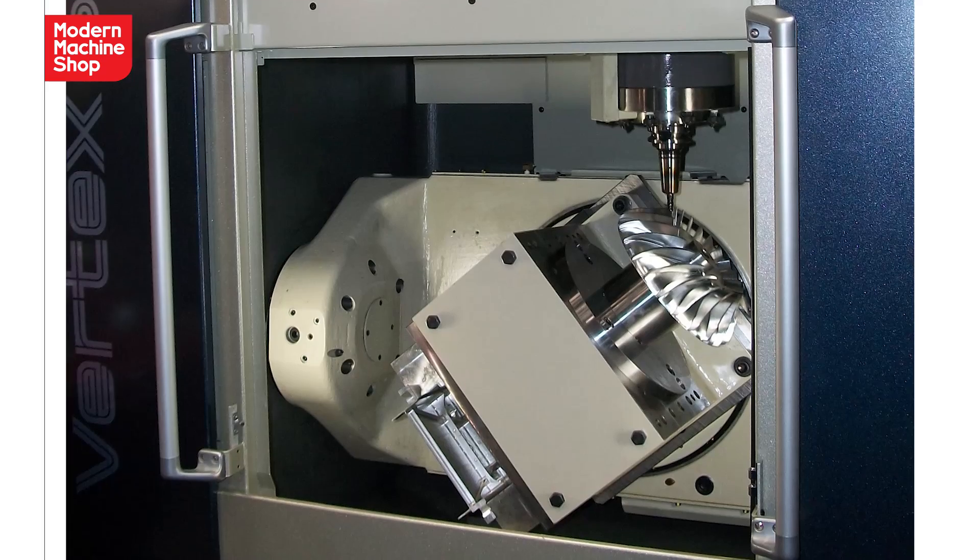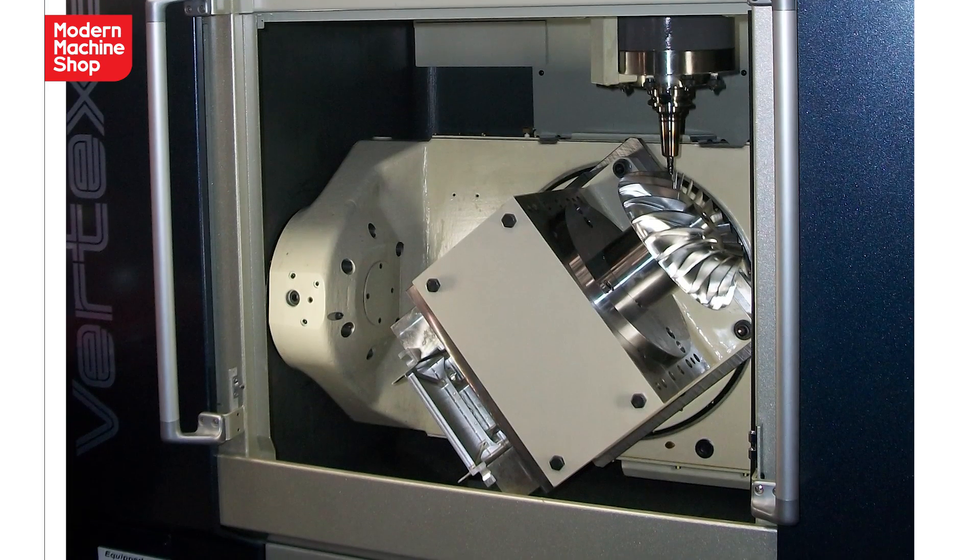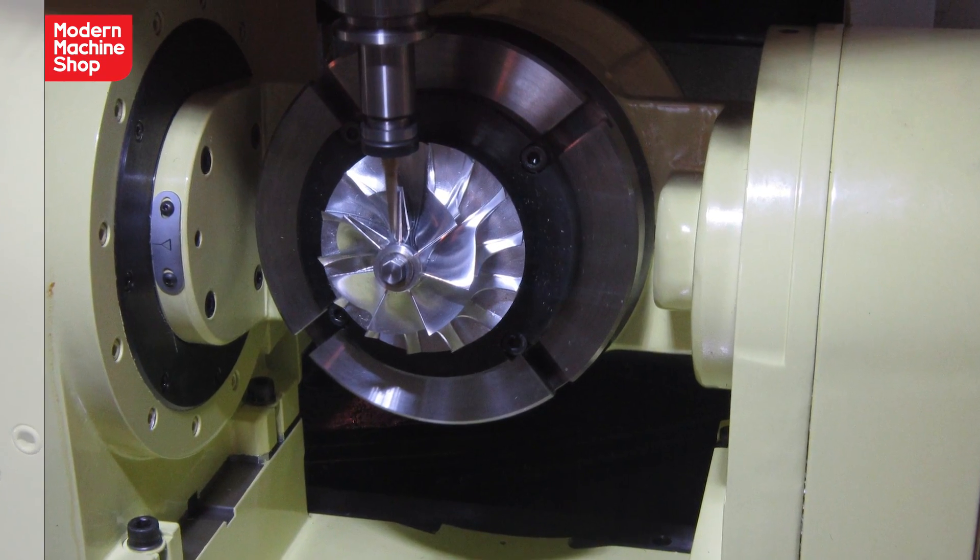When you go to trade shows like IMTS, you're going to encounter five-axis machining demonstrations. Those are typically for parts like impellers where you have various motions together simultaneously with a tool and workpiece. It's nice and neat and sometimes necessary for those types of tricky parts.